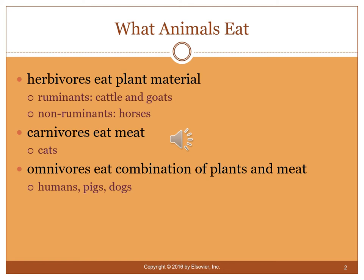Carnivores eat meat — cats are obligate carnivores, meaning they cannot survive without eating meat. So putting a cat on an all-vegan or vegetarian diet won't work. Omnivores eat a combination of plants and meat, and include humans, pigs, and dogs.